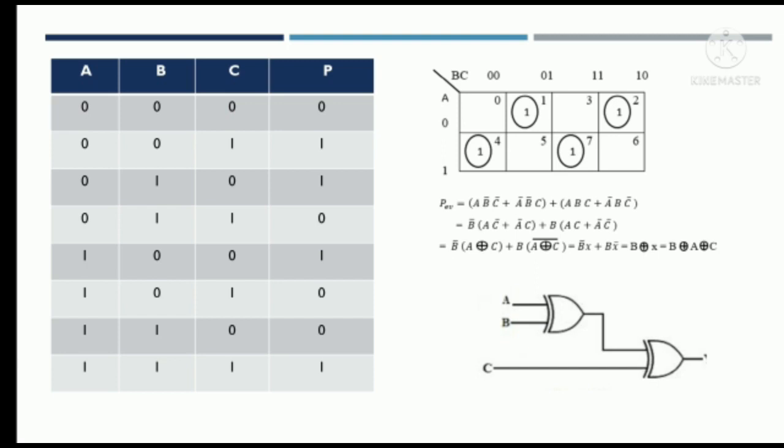In the second case, C is 1 and A and B are 0. The number of ones is odd, so using even parity generation, the parity bit is generated as 1. Similarly, for other cases the parity bit P is generated accordingly. To get the equation of the parity bit, we construct the K-map and derive the final equation.